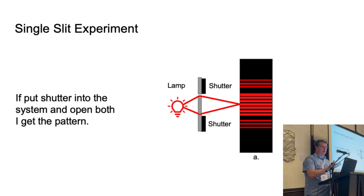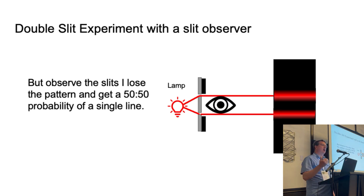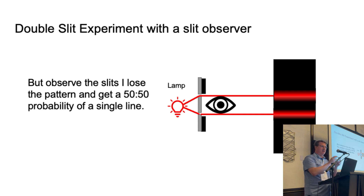Now let's put some shutters in front of these slits. If I close one of the shutters, I obviously just get a single line — in fact, what you do get is single-slit diffraction, so there's some tiny kind of furriness to this line. If you try and look at the slits and work out which way the photon went, you get two lines. You no longer get the interference pattern — it goes away. So you can't gain knowledge of the individual path of the photons.